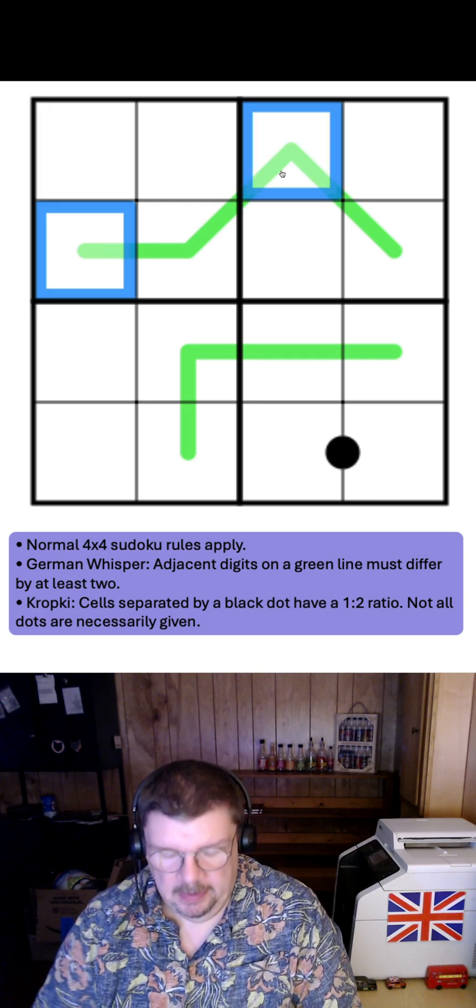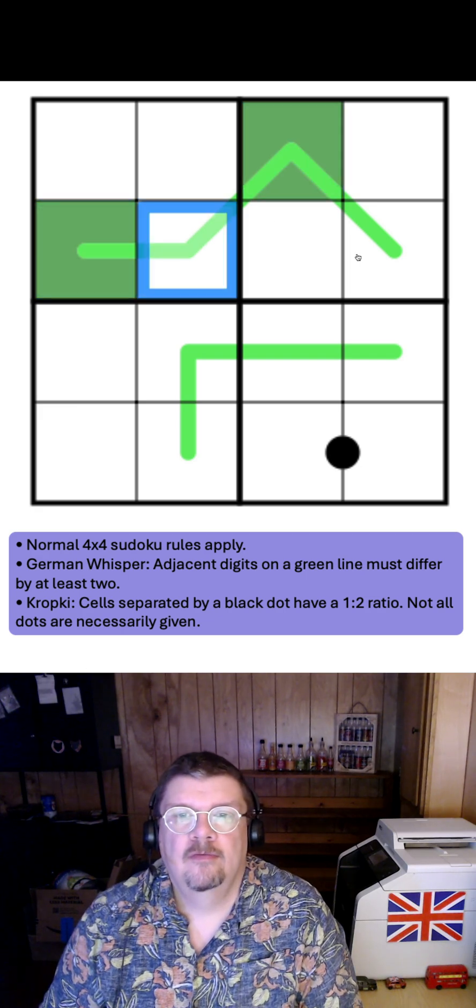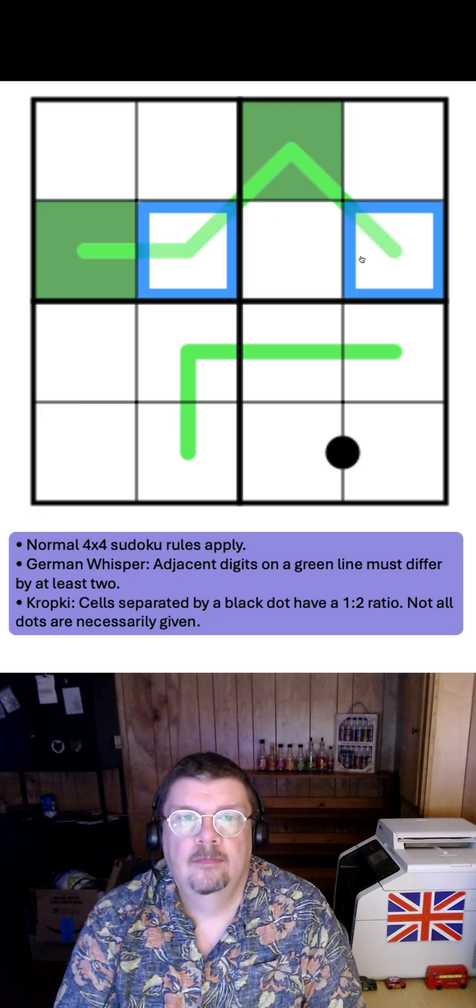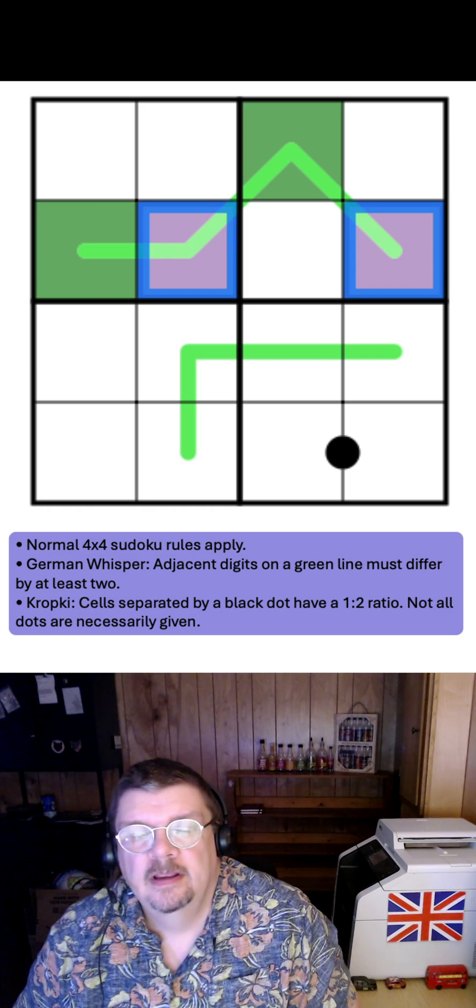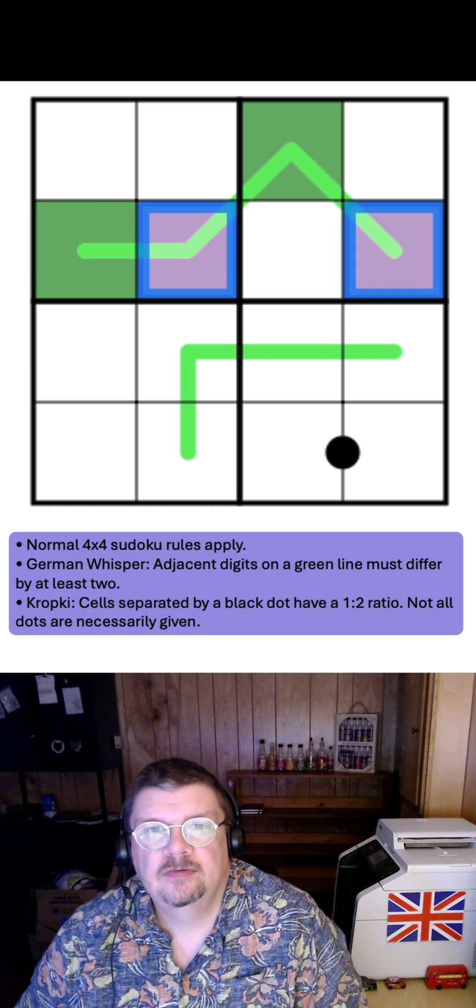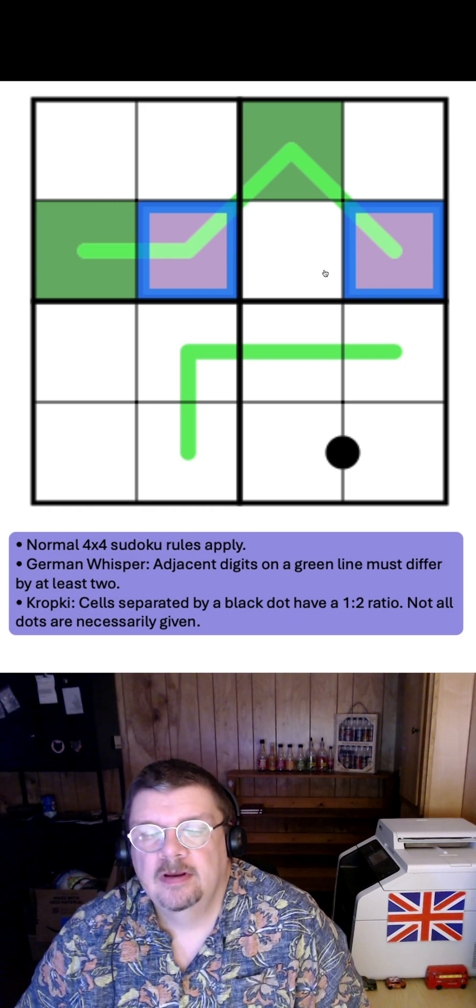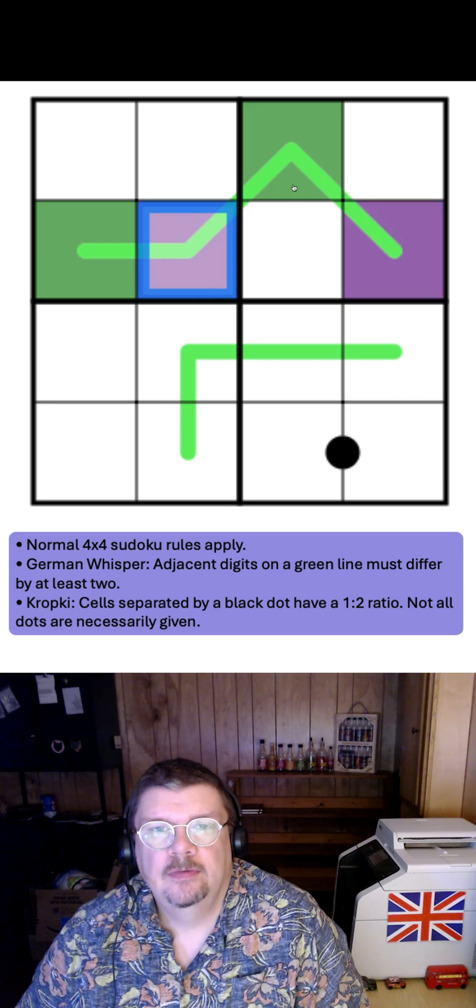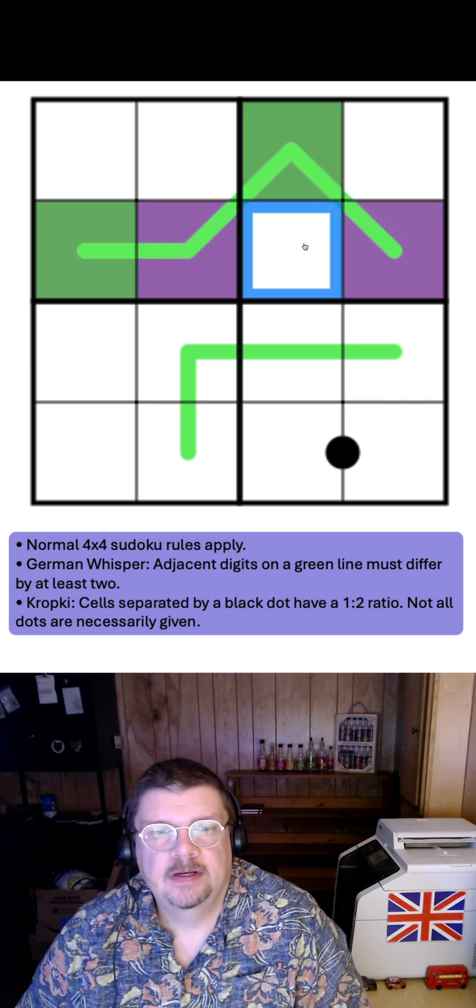Don't know which is going to be which, but I know that of these, one of those is low. One of the colors is low, one of the colors is high. So 1 and 2 being our low digits, and 3 and 4 being high. But I don't yet know which of these is going to be which.